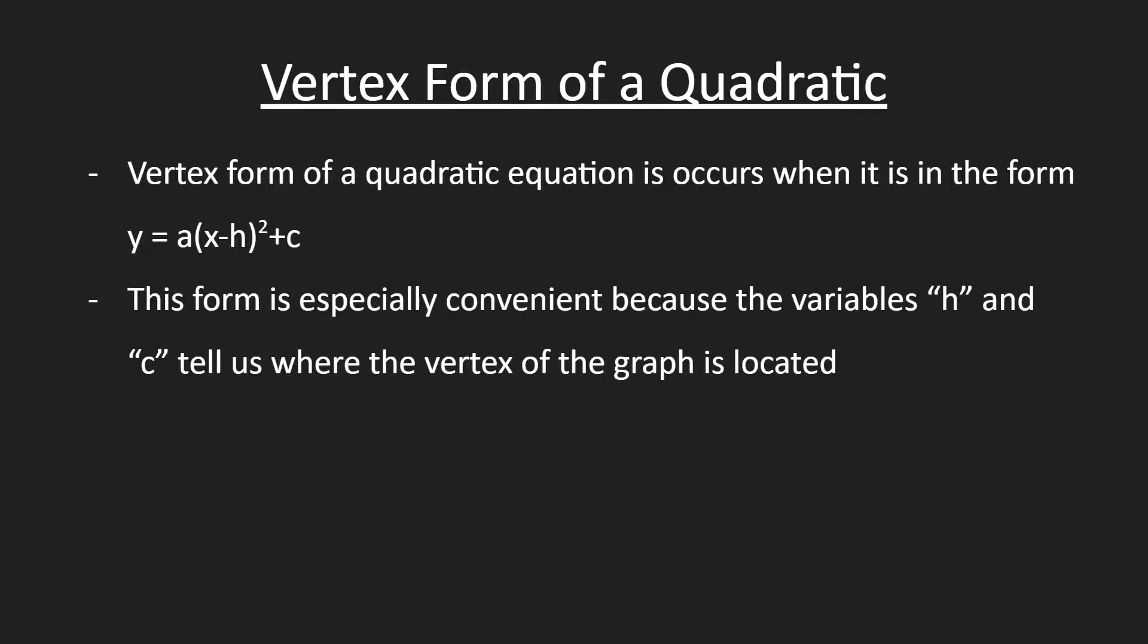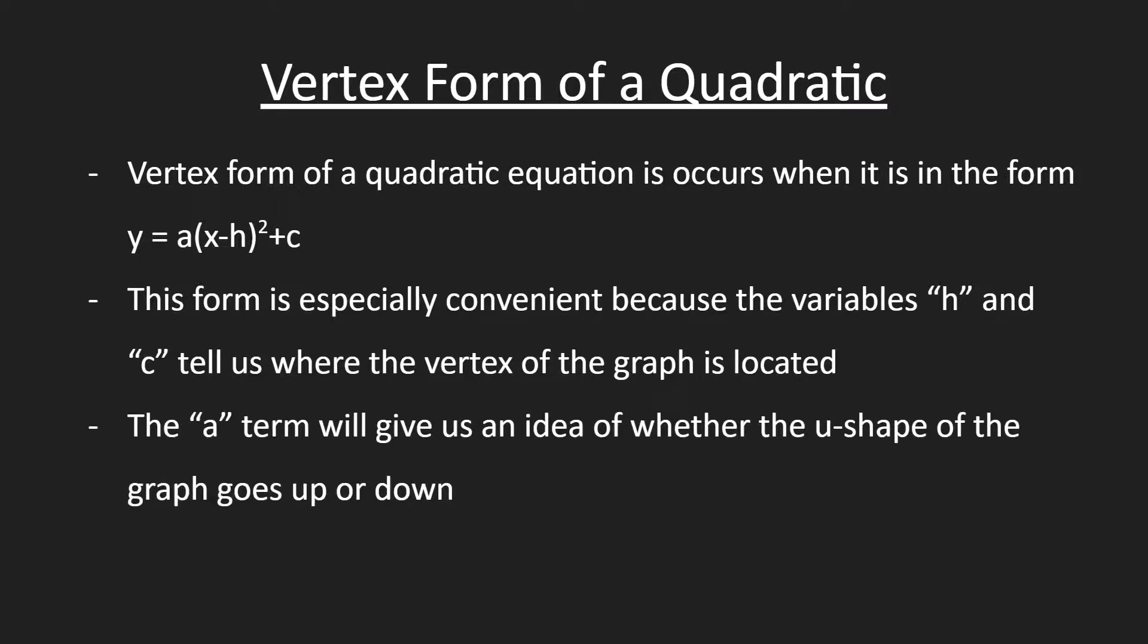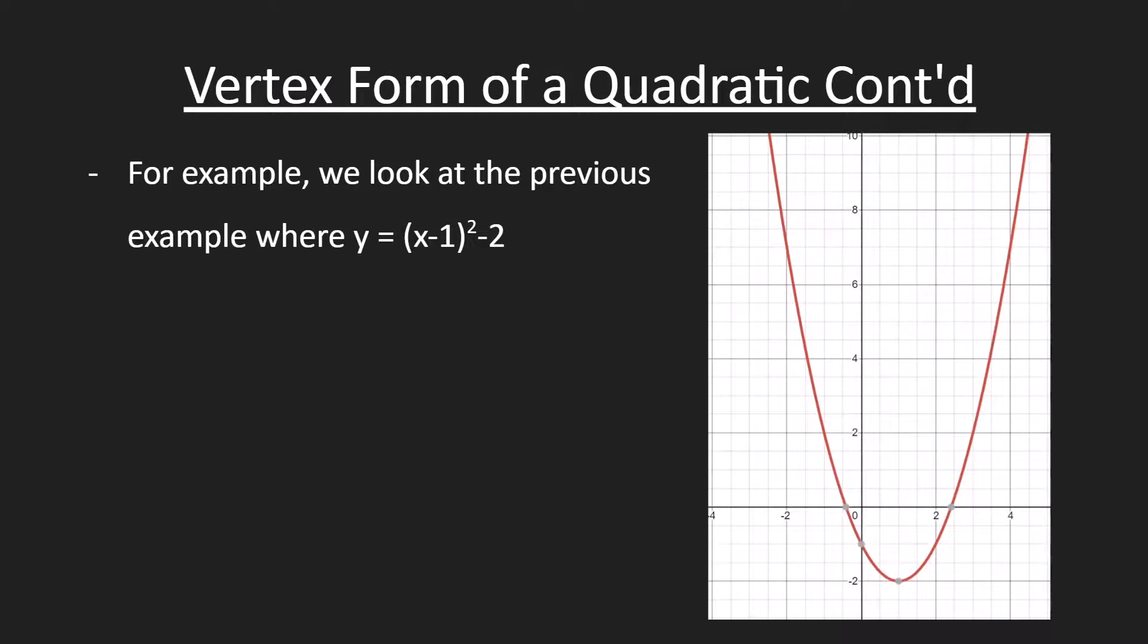The vertex would either be the lowest point on the quadratic or the highest point. The a term will give us an idea of whether the U-shape of the graph goes up or down.